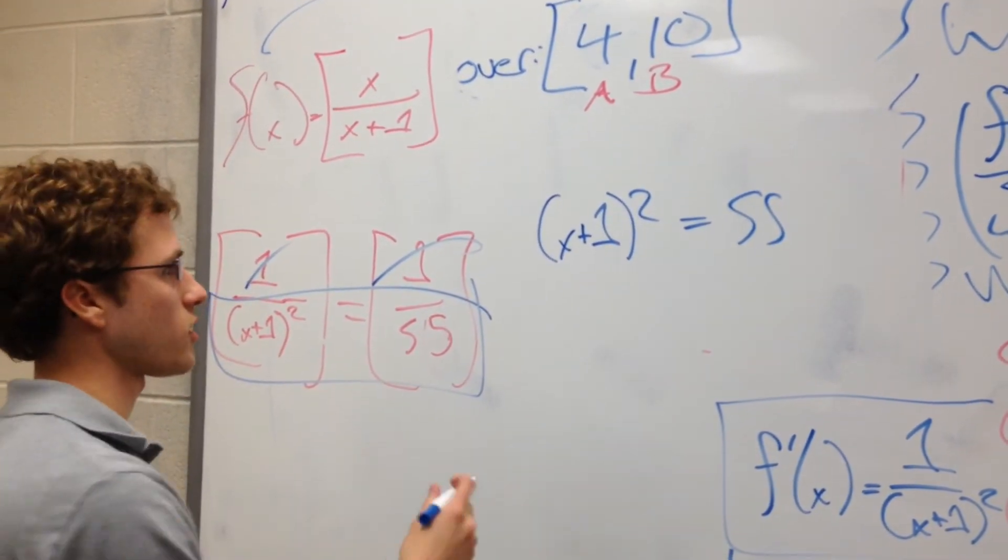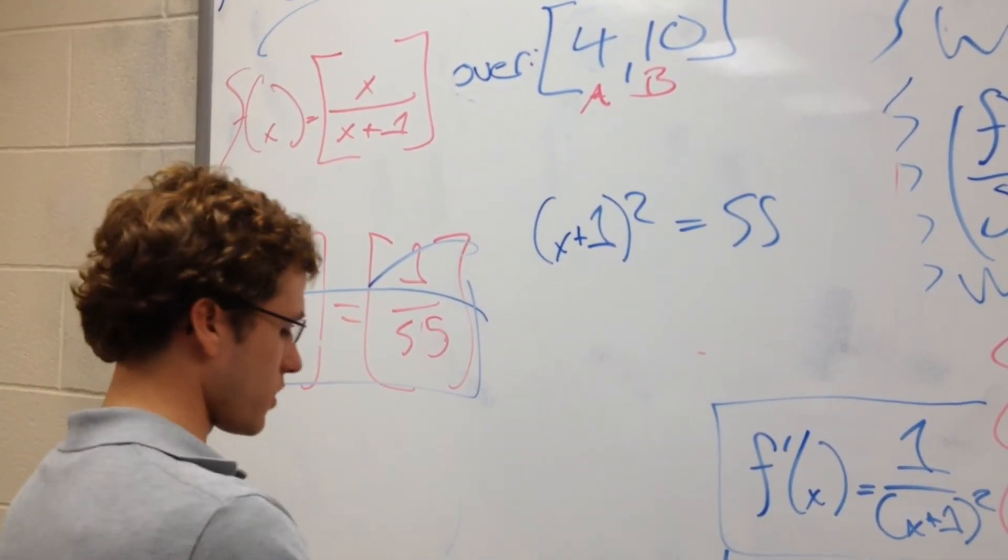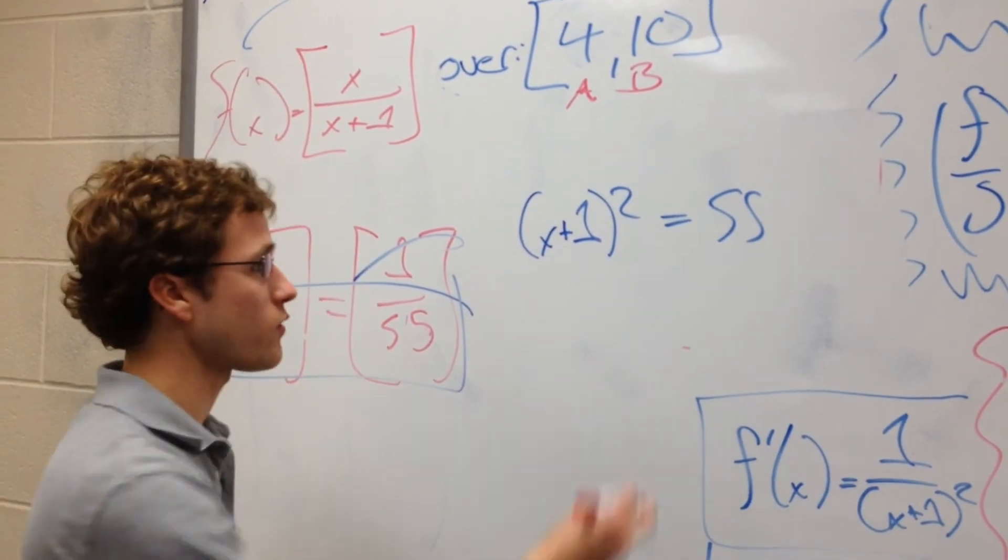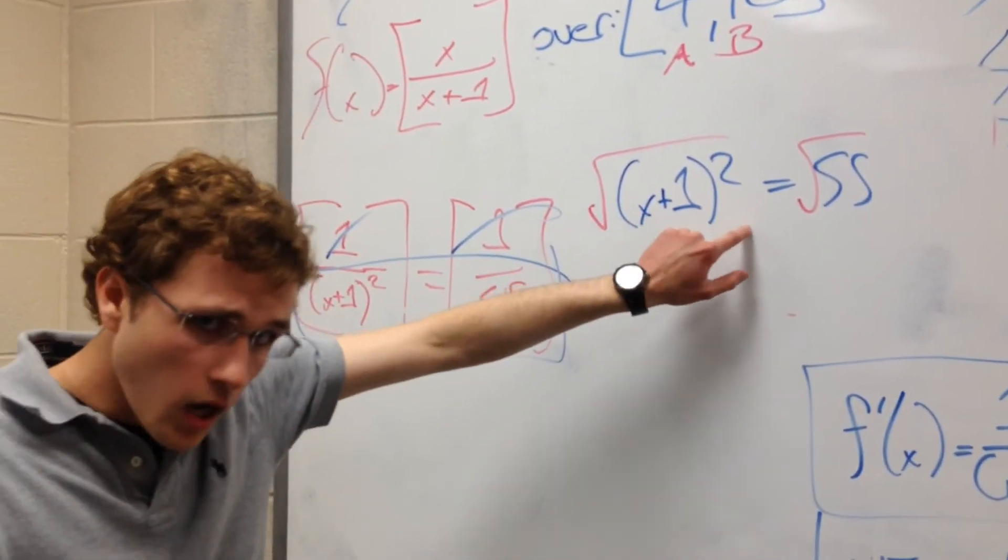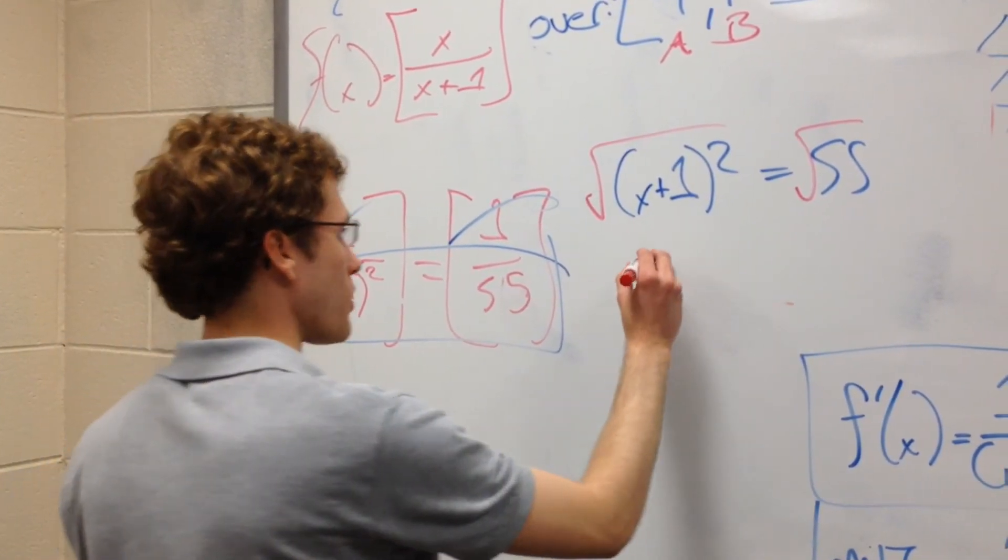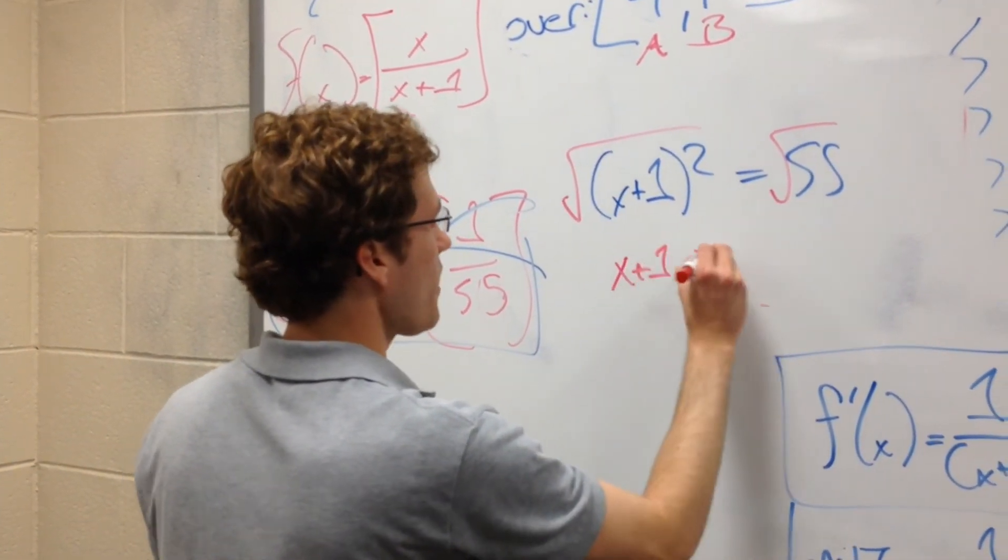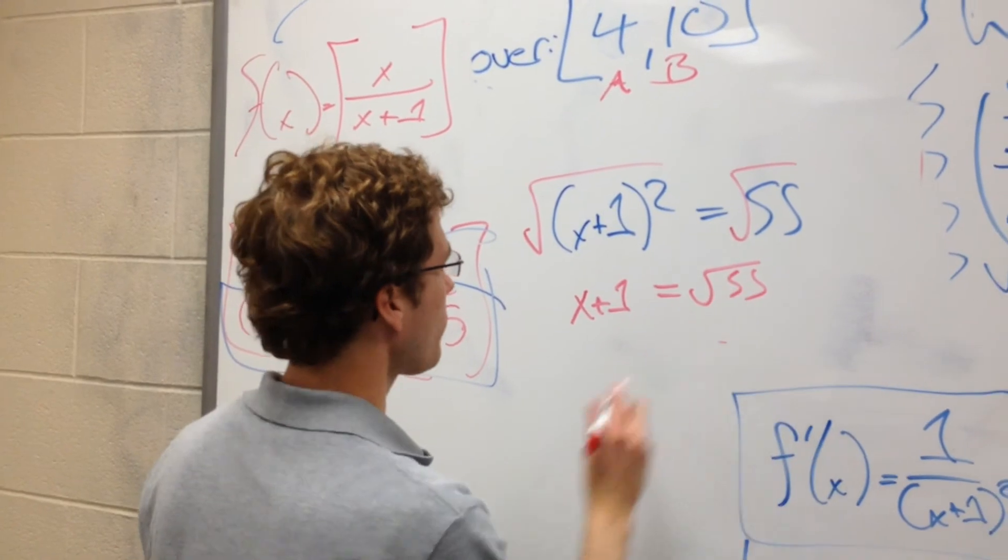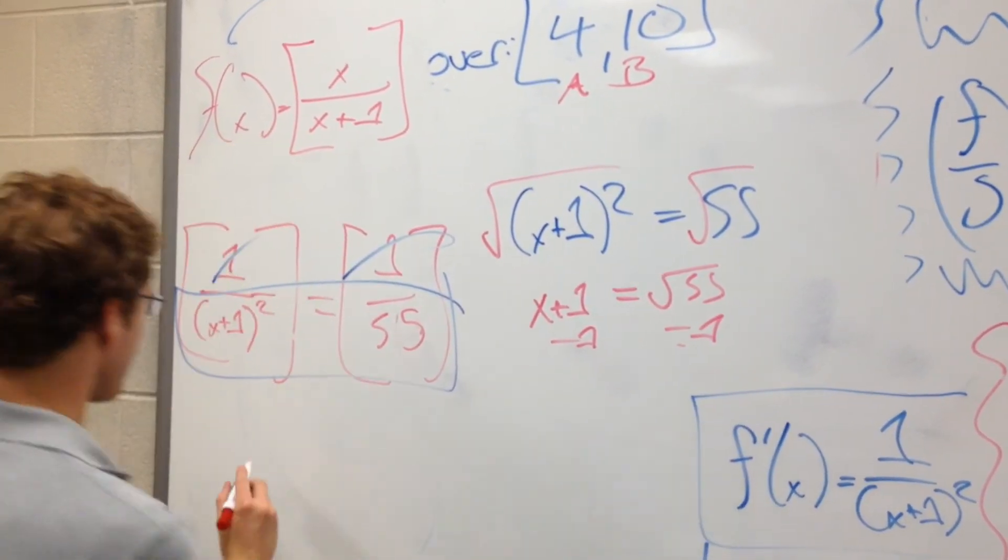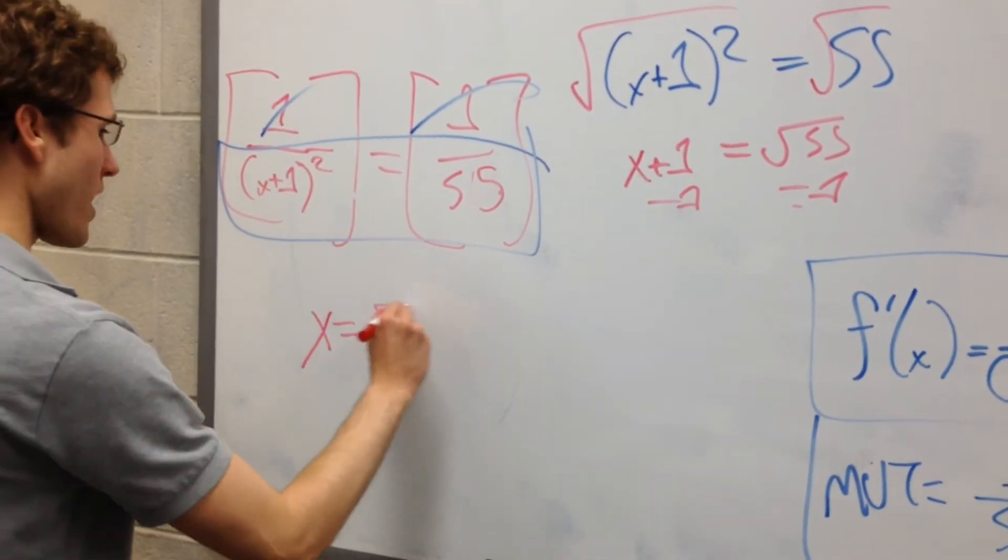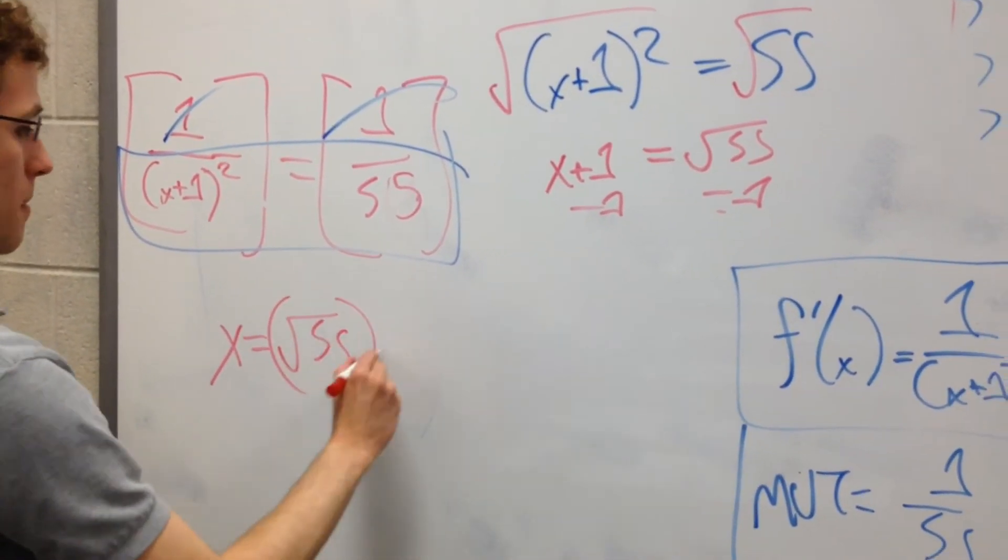So, we have x plus 1 squared equals 55. So, what's an obvious path for us to go down? Let's just take the square root of each side. When we take the square root of this, it's going to kill the fact that we're raising it to the power of 2. So, we're just going to get x plus 1 equals radical 55. And then, we can just do some simple algebra, subtract 1 from both sides, and we're going to get that x equals radical 55 minus 1.